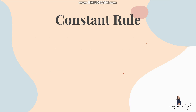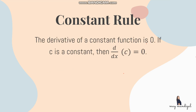First is the constant rule: the derivative of a constant function is 0. If c is a constant, then the derivative of c equals 0. Whenever we have a constant function, its derivative is automatically 0 — just like our previous example g of x equals 6, which is a constant, so its derivative is 0.